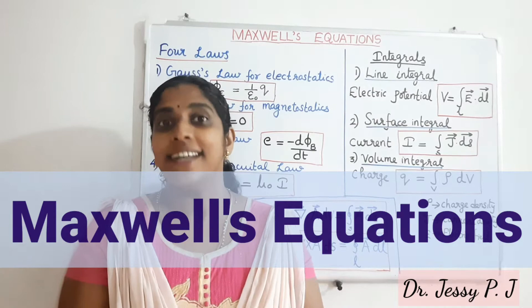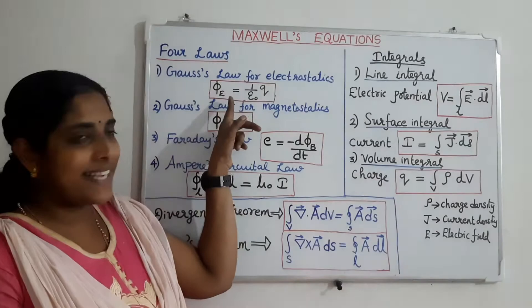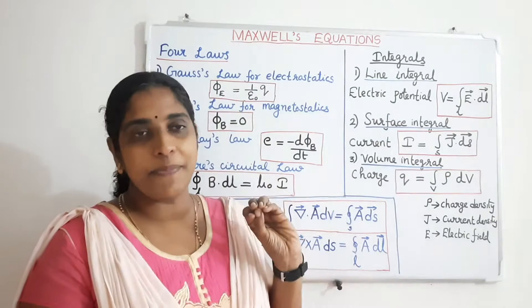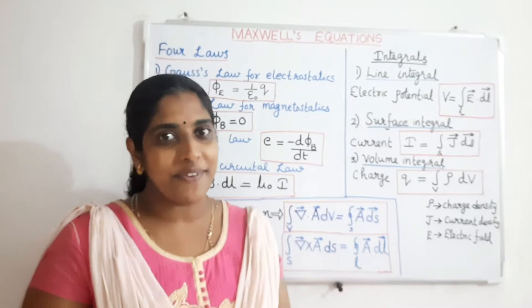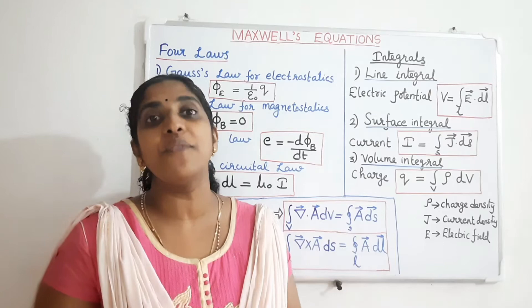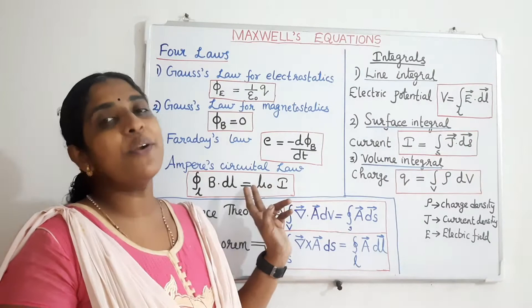These laws are: Gauss's law for electrostatics, Gauss's law for magnetostatics, Faraday's law of electromagnetic induction, and Ampere's circuital law. Gauss's law for electrostatics states that the total electric flux over a closed surface is equal to 1 by epsilon-0 times the net charge enclosed within the surface, where epsilon-0 is the permittivity in free space. Gauss's law for magnetostatics states that the total magnetic flux over a closed surface is equal to 0. Faraday's law states that the induced EMF is equal to the rate of change of magnetic flux linked with the coil. And Ampere's circuital law states that the line integral of the magnetic field over any closed path is equal to mu-0 times the net current enclosed within the path.